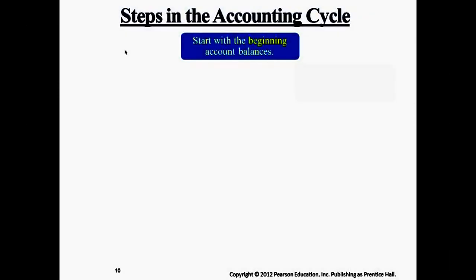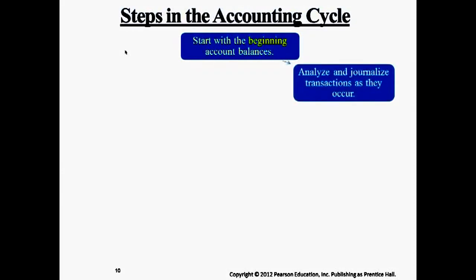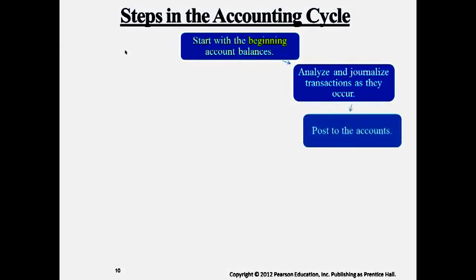At the start of the year, as transactions happen — as we purchase things, as we sell things — corporations will analyze and journalize new transactions. We start from the beginning balance from last year, capture new transactions, and post these transactions to T-accounts as they happen. This part of the process was covered in Chapter 2.